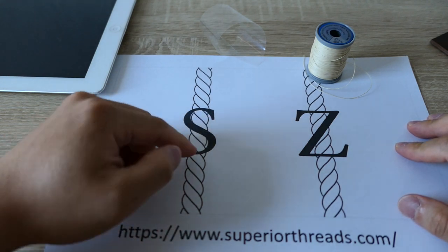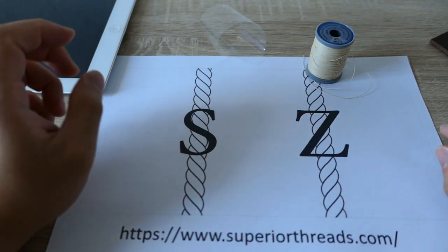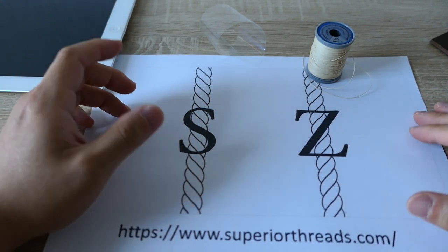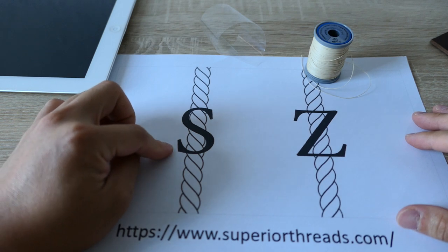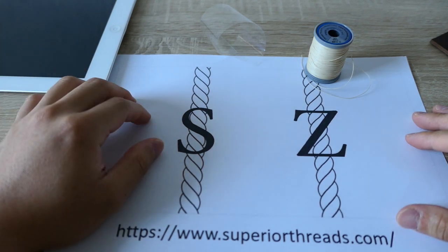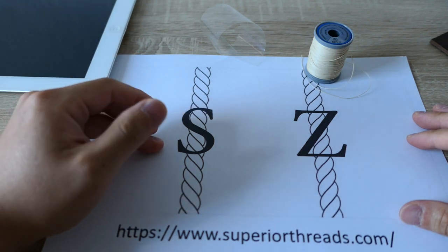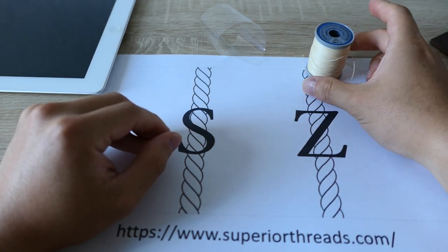And there are specialty areas or special threads are made with S-twist. And sometimes it's called left twist or right twist, but this is the more common way to describe a thread. I've seen some S-twist threads, more of vintage thread or shoe making industry threads.